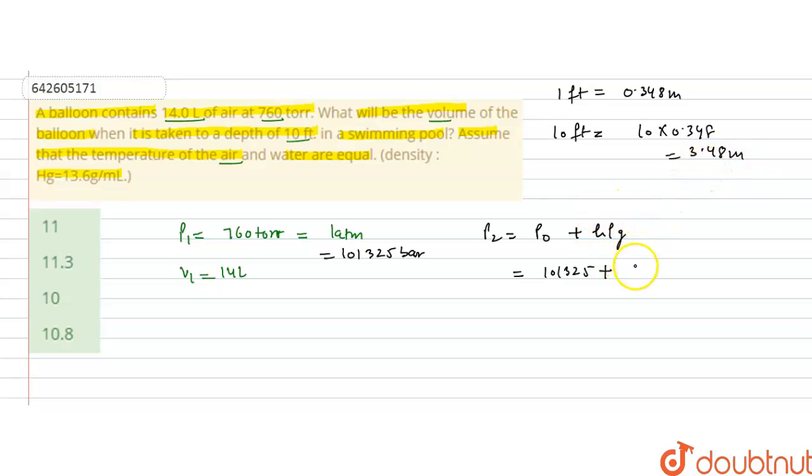Now this will be the height, that is 3.48 into density. Density of water is 1000 kg per meter cube, into acceleration due to gravity, that is 9.8.